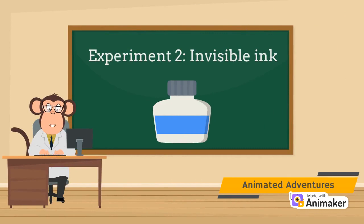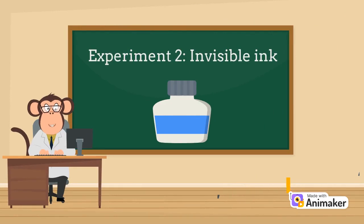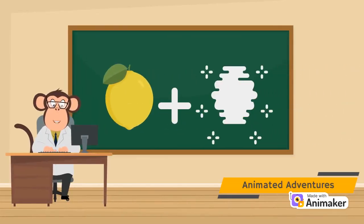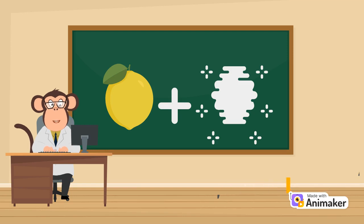Experiment 2. Invisible Ink. Make an invisible ink using lemon juice and a Q-tip. Write a secret message on a paper and reveal it by heating the paper with a candle or a light bulb.